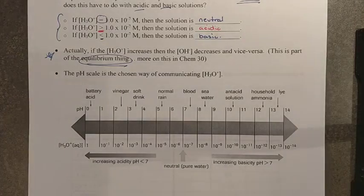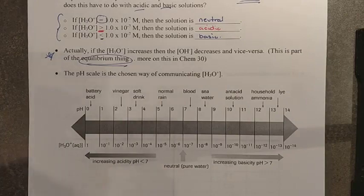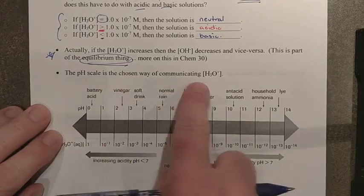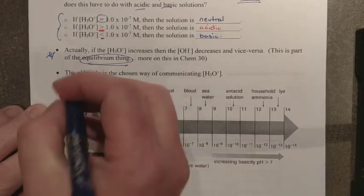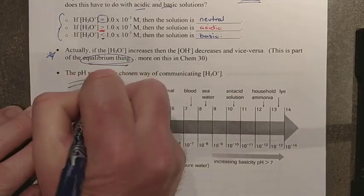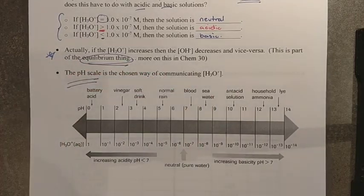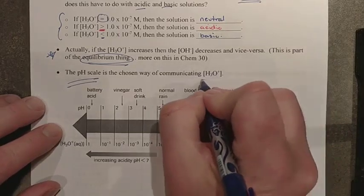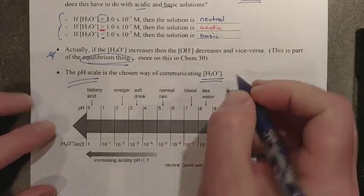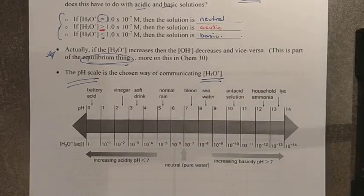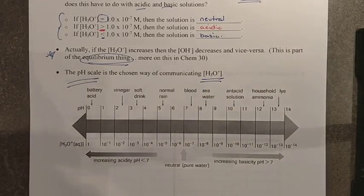We continue on with pH and pOH in chapter 6.2. We last left off with the pH scale, which is the way we communicate roughly and specifically the amount of hydronium in a solution that makes it acidic or basic.